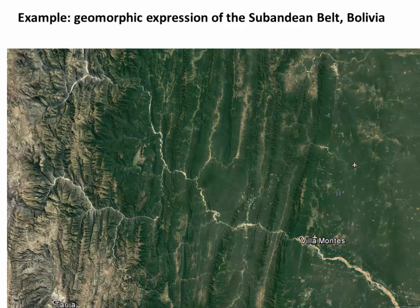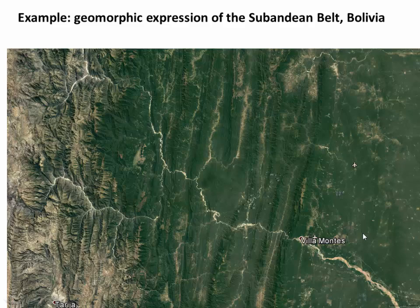Bringing it back to our motivating example — the Sub-Andean belt in the eastern Andes — this satellite image of all the north-south ridges shows so many classic things. We see rivers that have been blocked by a growing anticline ridge and deflected around until they join with another river that has enough energy to cut down through the anticlines. And as the next anticline grows further out to the east, it's being buried by sediment coming along the river, with growth strata accumulating until this next anticline can pop up from within the Foreland Basin.